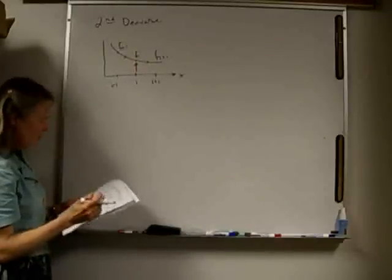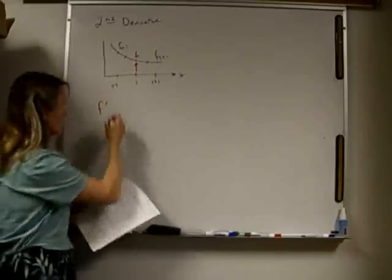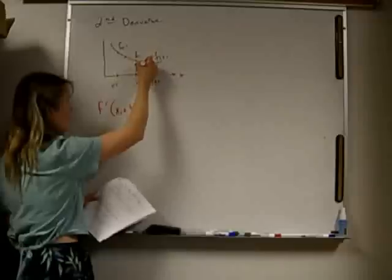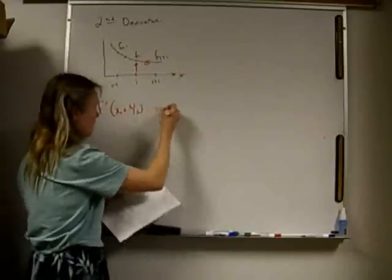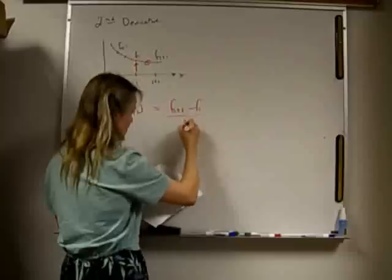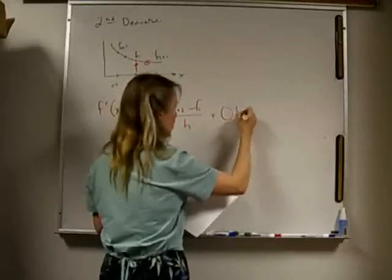So if I wanted to find the derivative, the first derivative of my function at x sub i plus h over 2, that's this point right there, that would be f of i plus 1 minus f of i divided by h, and its error would be on the order of h squared.